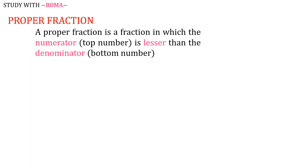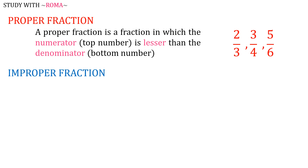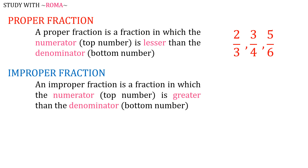A proper fraction is a fraction in which the numerator is lesser than the denominator, such as 2 thirds, 3 fourths, and 5 sixths.